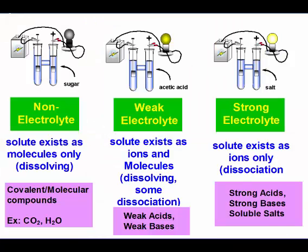When things dissociate, they don't all dissociate to the same degree. When they dissociate into ions, they can conduct electricity — that's what an electrolyte is. An electrolyte is a solution able to conduct a current due to the flow of electricity through the ions. A non-electrolyte does not power the light bulb — it cannot transfer charge through the solution. Sugar doesn't break apart into ions, so charge can't be transferred, making it a non-electrolyte. These molecules only dissolve; they do not dissociate. That's going to be your covalent and molecular compounds, such as CO₂ and H₂O.